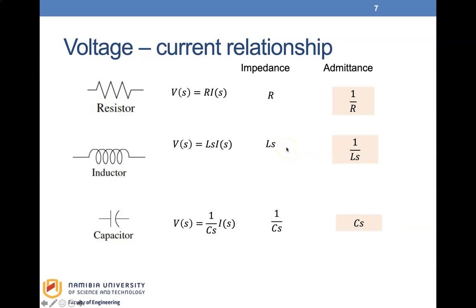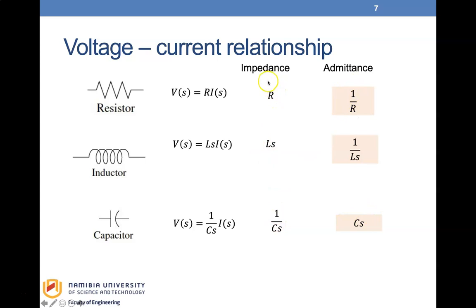There is another property called admittance, which is the inverse of impedance. So the admittance for the resistor is 1/R, and similarly, admittance is the inverse of impedance for all elements.